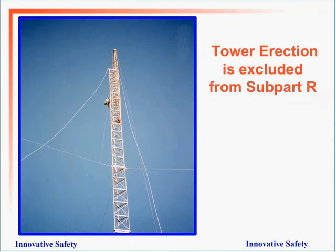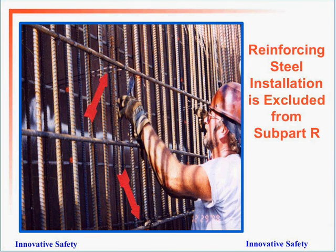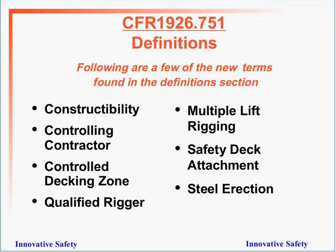Power erection is excluded from Subpart R, as is precast concrete construction and reinforcing steel installation, which is currently under revision. Some definitions that are going to be different — you can find these in the subpart under definitions — include constructability, controlling contractor, controlled decking zone, qualified rigger, multiple lift rigging, safety deck attachment, and steel erection.